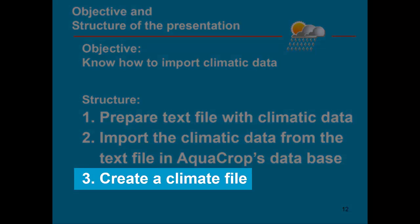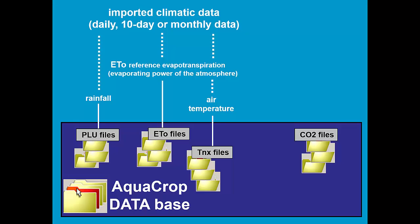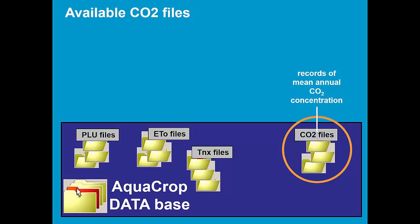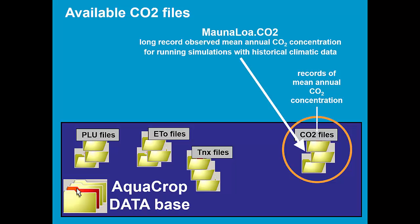Finally, we have to create a climate file. In the AquaCrop database we have the imported PLU, ET0, and temperature files. There are also a set of CO2 files, which is yearly data containing records of mean annual CO2 concentration. There are several CO2 files available in the AquaCrop database. There is the Mauna Loa CO2 file, which has long records of observed mean annual CO2 concentration and will be used for running simulations with historical climatic data.